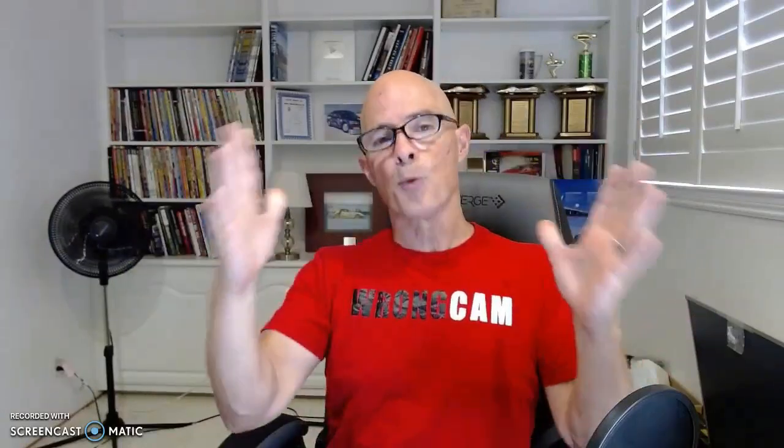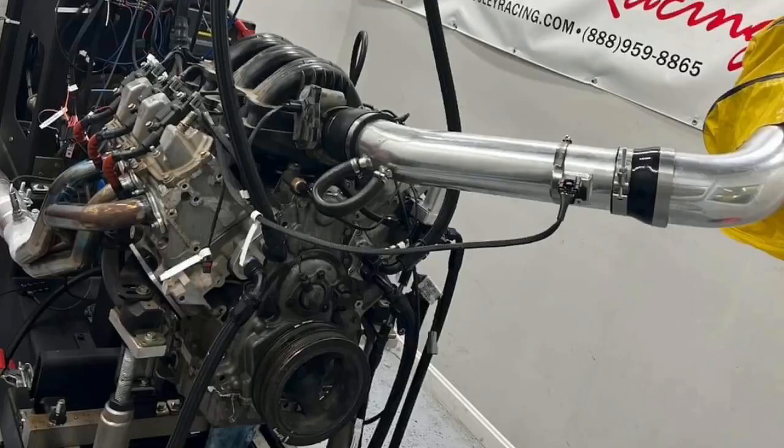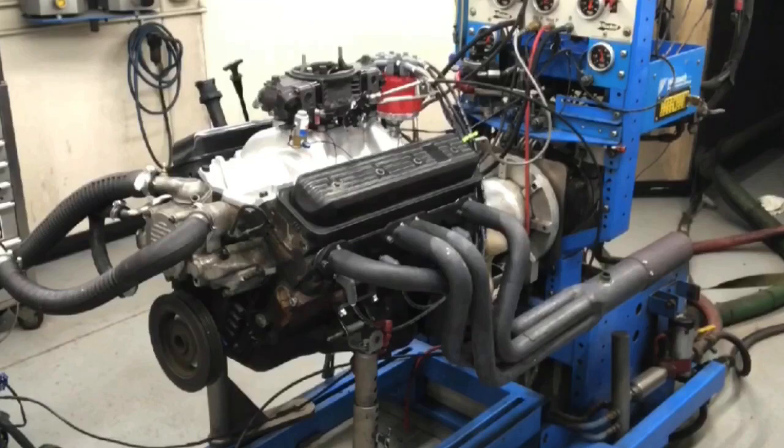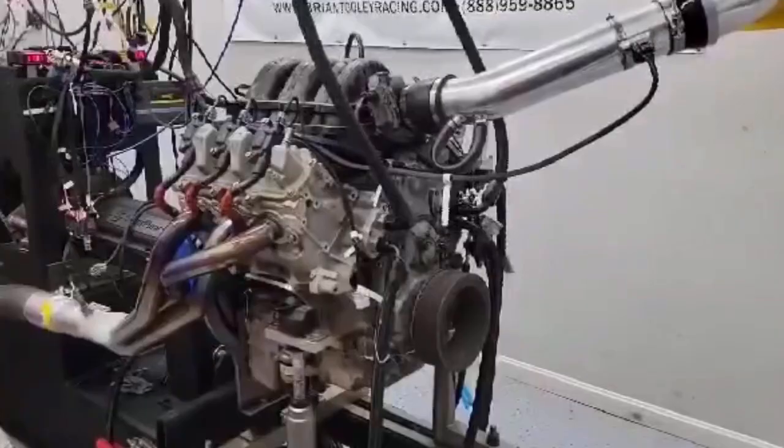Today we're going to take a look at an evolutionary shootout between the 4.3 liter V6. Actually, it's not just a 4.3 liter V6. We have two 4.3 liter V6s, one 4.3 liter V8, and one 4.2 liter inline six cylinder. We're going to go through the progression of the way that I tested all these motors and see how over the years GM has made this kind of displacement better and better. Let's check it out.